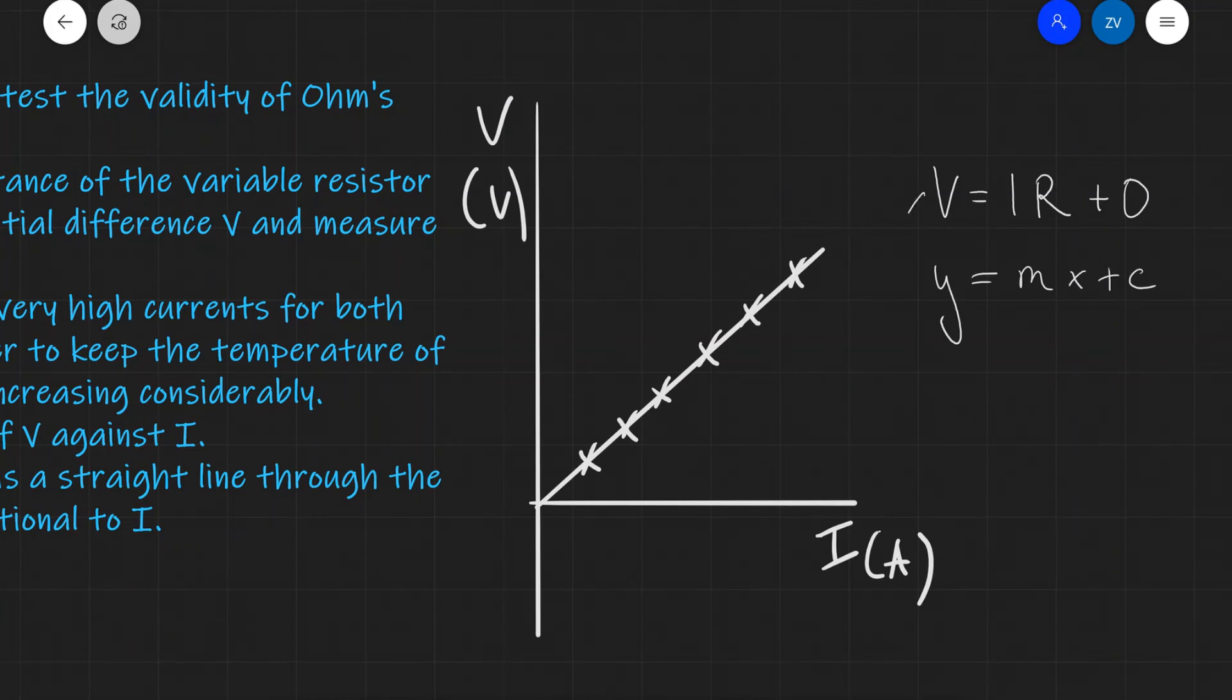Notice that V is on the Y axis, current is on the X axis, our intercept is indeed zero, and then what is left for our gradient is in fact our resistance. So our gradient is equal to our resistance in this case.